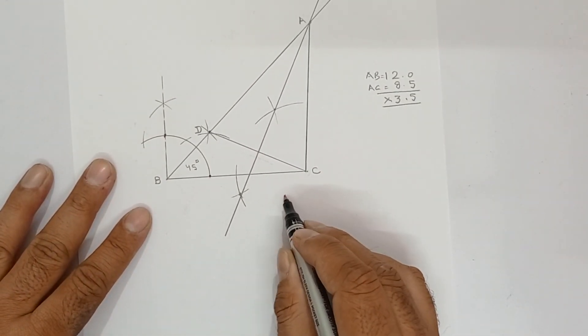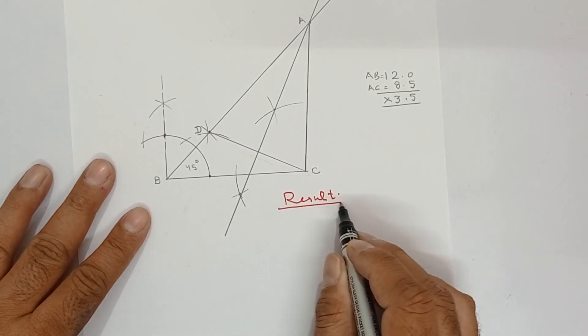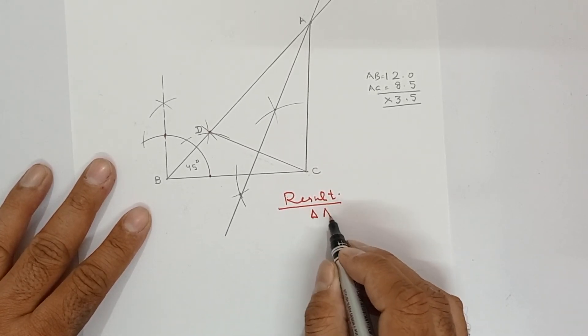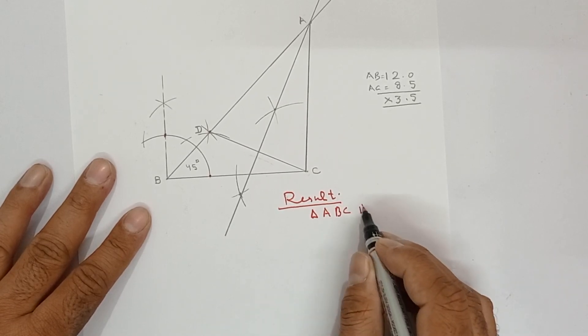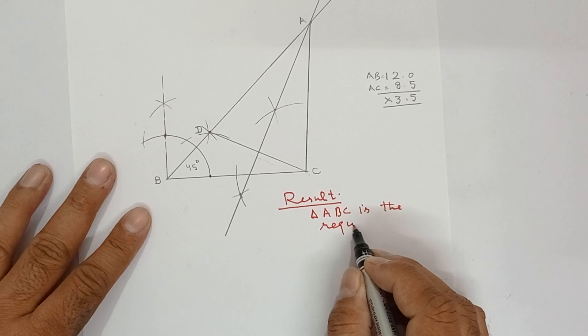Now you have to write the result also, definitely. You do not have to write steps of construction, until asked. So, triangle ABC is the required triangle.